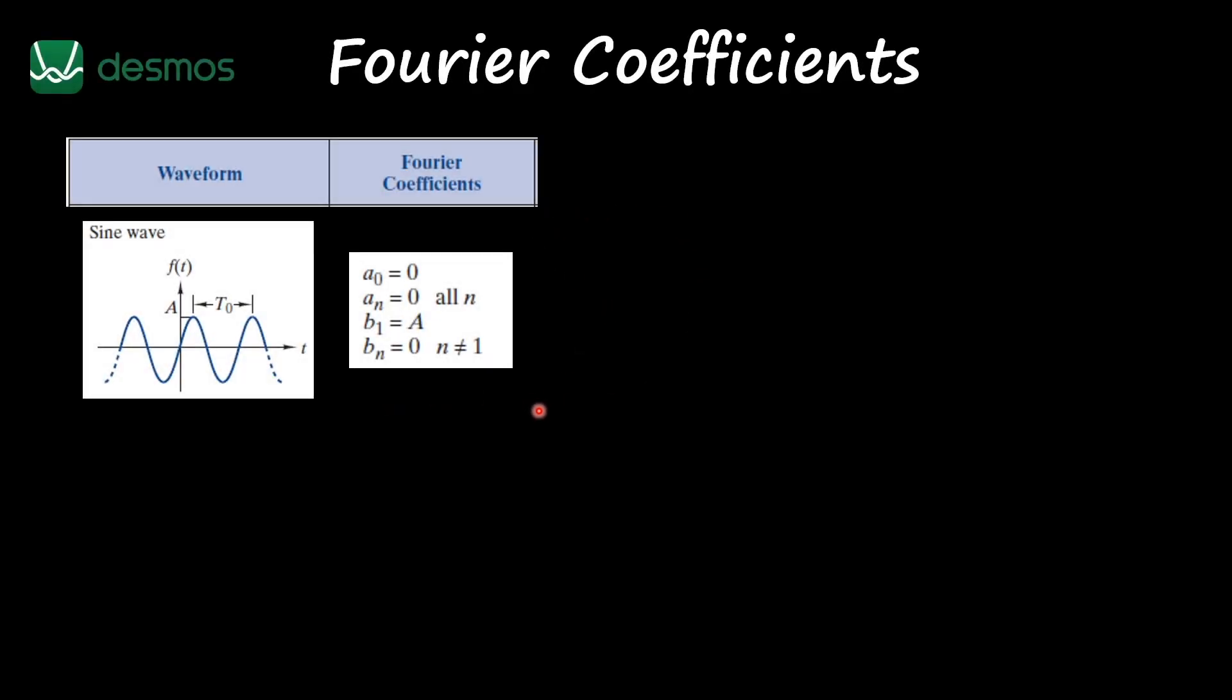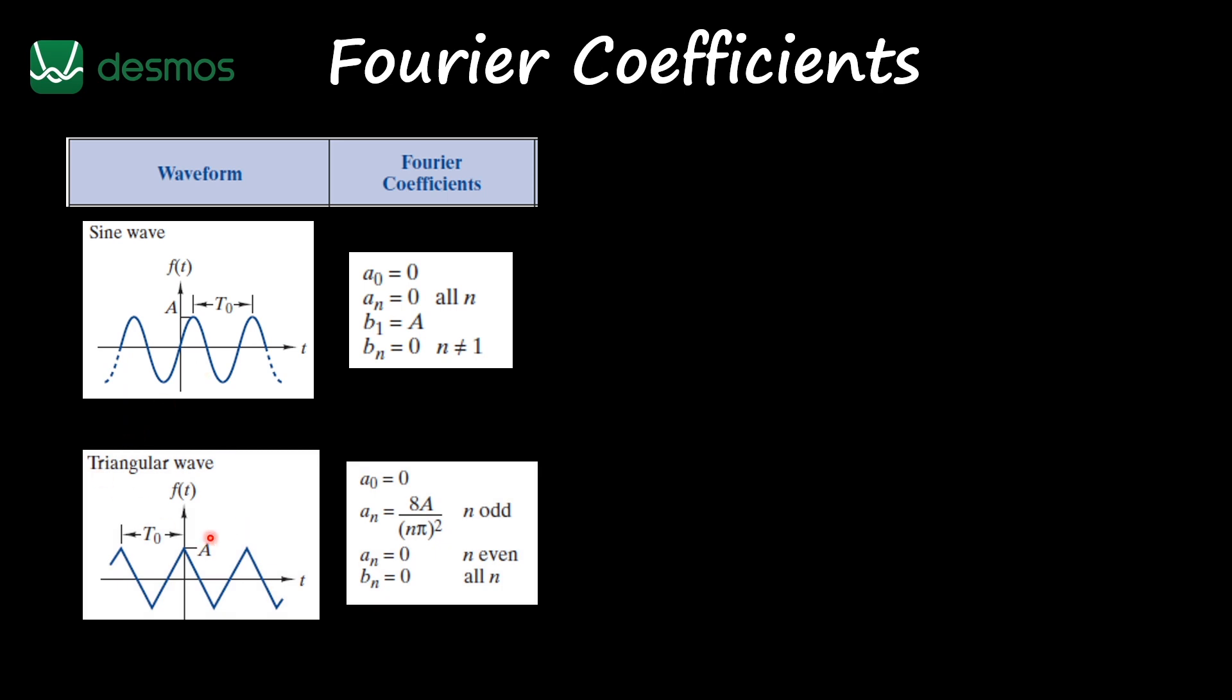All right, so our second waveform is going to be a triangle wave. In this case now, notice that I don't have any DC component in our signal—it's equal to zero—and I only have the Fourier coefficients A of N when N is odd.